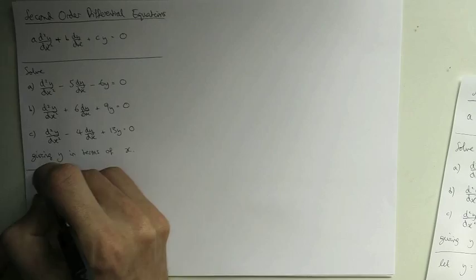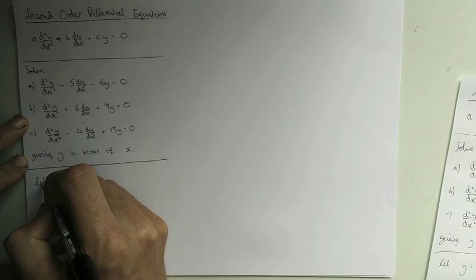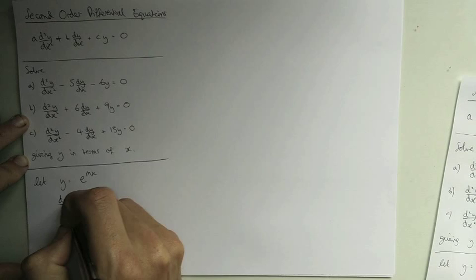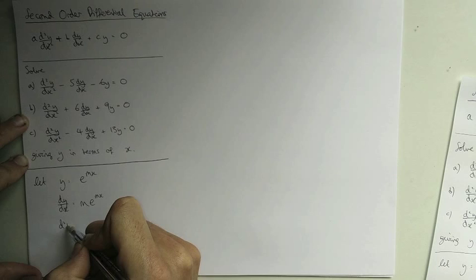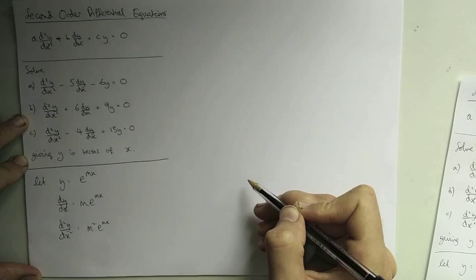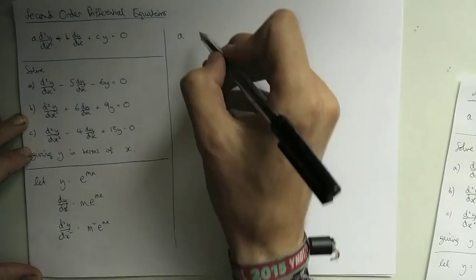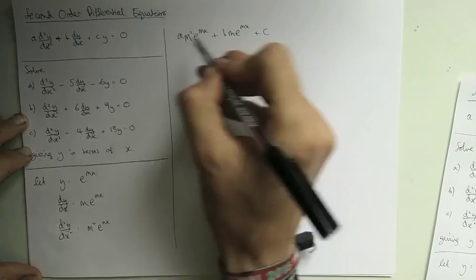The way we solve this in general is by letting y equal e to the mx, where m is some unknown number we're trying to work out. We then differentiate it: the differential of e^(mx) is still e^(mx) multiplied by the differential of mx, which is m. Differentiating again multiplies by m again, giving m² e^(mx). We then plug this back into the equation: a times m² e^(mx), plus b times m e^(mx), plus c times e^(mx).